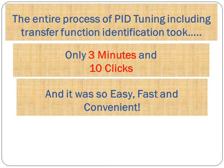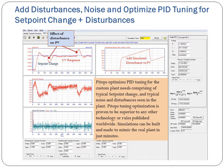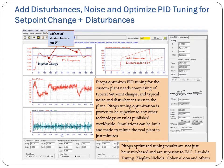And it was so easy, fast, and convenient. No other competitor software, technology, or algorithm can match the power, ease, and functions of PyTops. PyTops optimizes PID tuning for custom plant needs comprising typical setpoint changes and typical noise and disturbances seen in the plant. PyTops tuning optimization is proven superior to any other technology or rules published worldwide, and is not just heuristic-based — it is superior to IMC, Lambda tuning, Ziegler-Nichols, Kohen-Kuhn, and others.